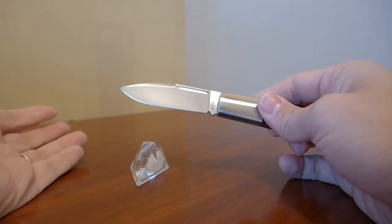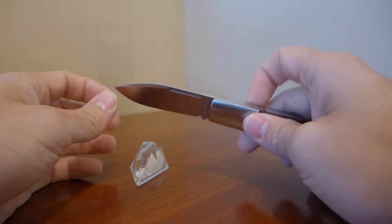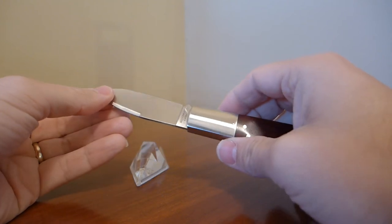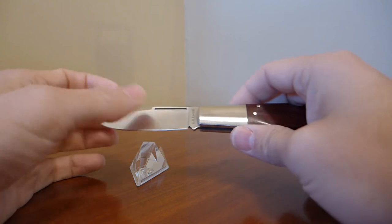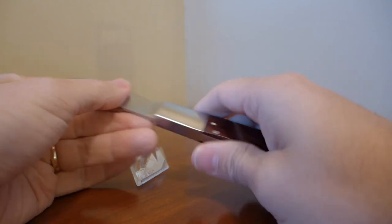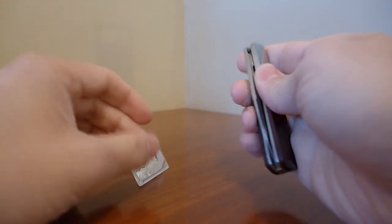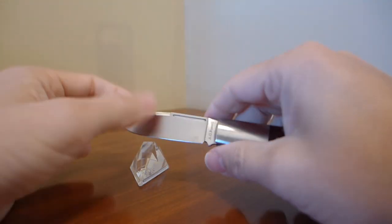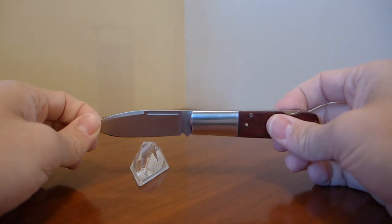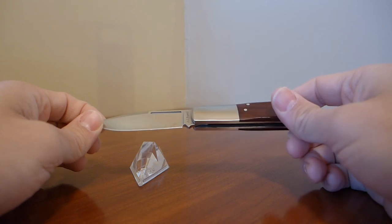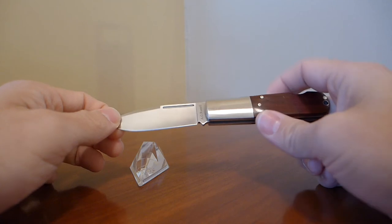So if you combine the rust-enhancing factors of something like a bead blast finish with the already less stain-resistant 8CR13-MOV formula, you're going to get something that will rust more readily. And if you look at the review of the Kershaw Injection 3.0, which ran 8CR13-MOV in a bead blast blade, you can see that there were pictures that I took after using the knife in some regular cutting chores. And the knife actually had some staining on it, some coloration. It wasn't rust, but it was definitely coloration.